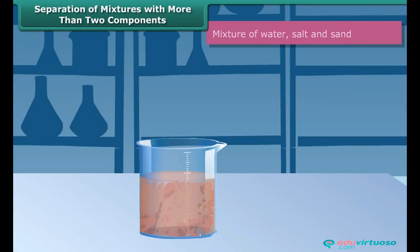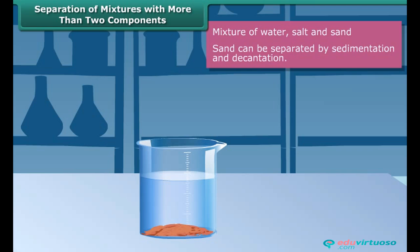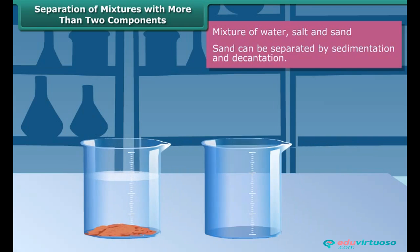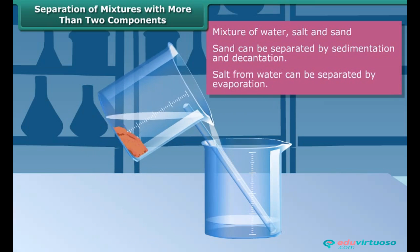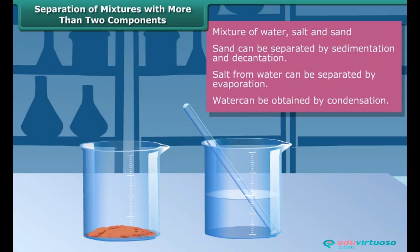If you are given a mixture containing water, sand and salt, how will you separate the three components from one another? You will leave the mixture undisturbed for a while. Sand, which is heavy and insoluble in water, settles down at the bottom of the container. The mixture is then separated by decantation to get sand. Now, salt being soluble is completely dissolved in water. This is done through evaporation and condensation.